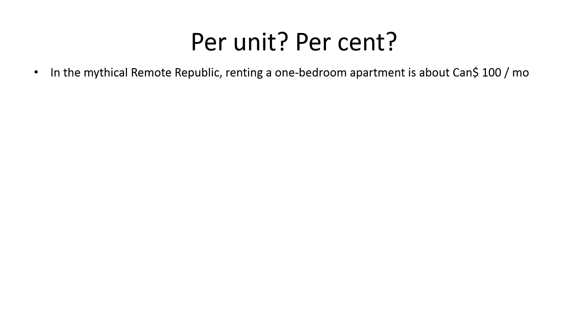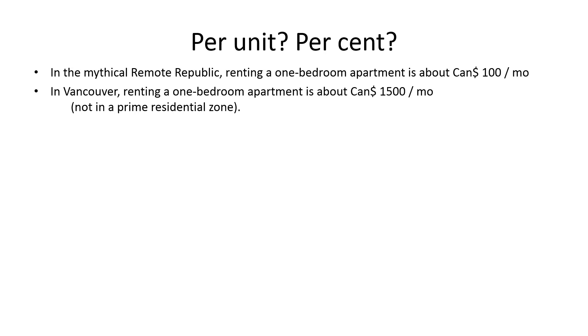The per-unit system. Consider the following hypothetical situation. In the mythical remote republic, renting a one-bedroom apartment costs a hundred dollars a month. In Vancouver, renting a one-bedroom apartment is about $1,500 a month. Where is it cheaper for a local inhabitant to rent an apartment?